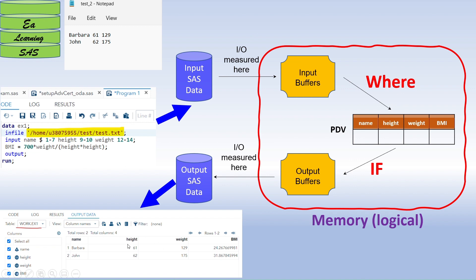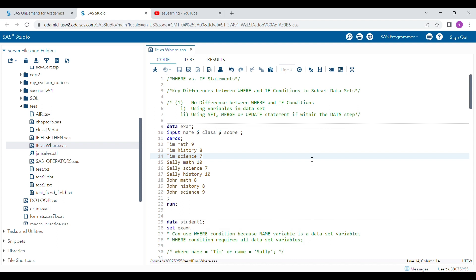For example, if I want to subset a data set with the condition height equals 61: if you use WHERE height = 61, only data values where height equals 61 will enter into the PDV, and the output data set is generated accordingly. But if you use IF height = 61, both records go to the PDV, and subsetting occurs after that. So it's important to understand that WHERE is applied before data enters the PDV, while IF is applied after.